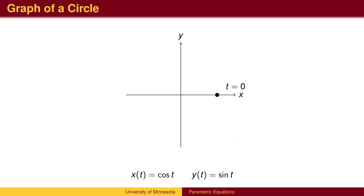We begin at the point (1,0), when time t equals zero. We let x equal the cosine of t, and y equal the sine of t.